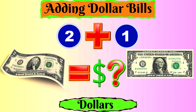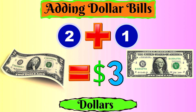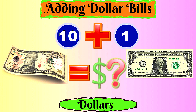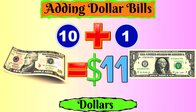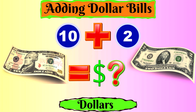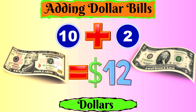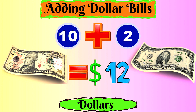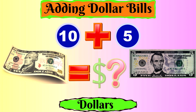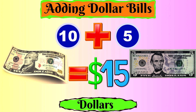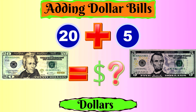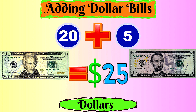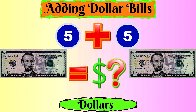Two dollars plus one dollar equals three dollars. Ten dollars plus one dollar equals eleven dollars. Ten dollars plus two dollars equals twelve dollars. Ten dollars plus five dollars equals fifteen dollars. Twenty dollars plus five dollars equals twenty-five dollars. Five dollars plus five dollars equals ten dollars.